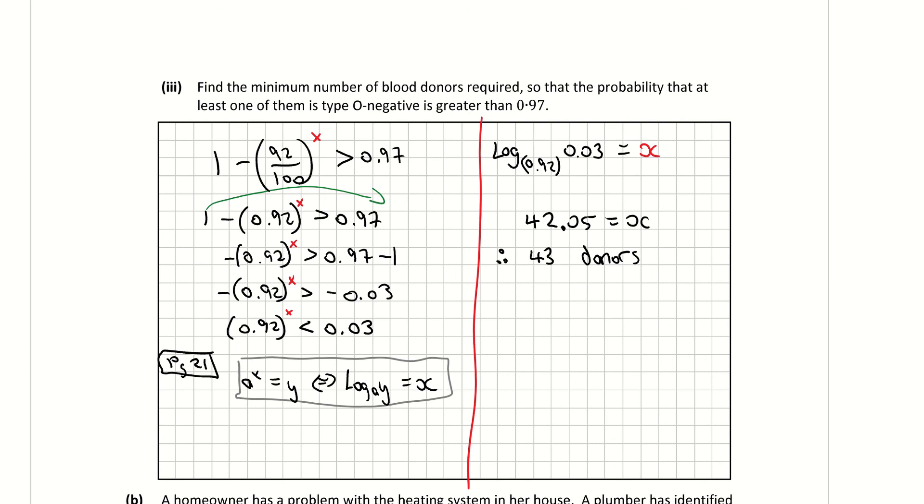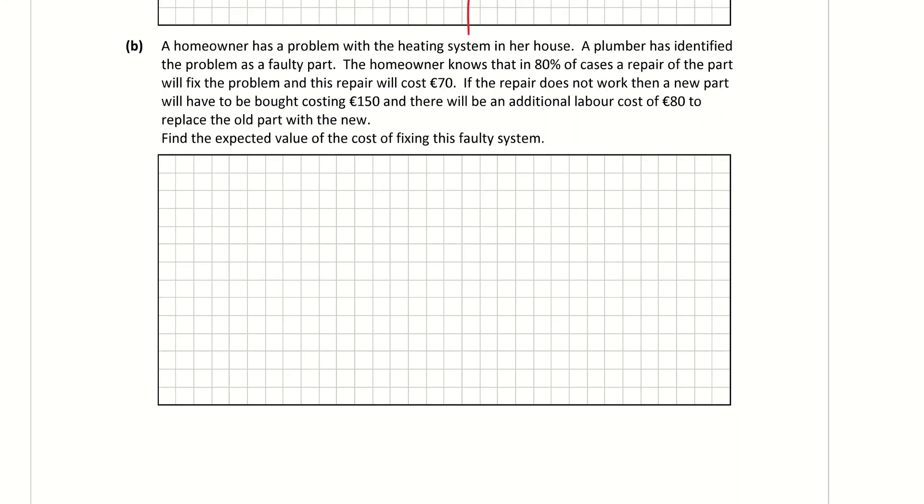Part b to that question. So it's different now. We've finished part a, those three parts were linked. b is completely different. So b is saying a homeowner has a problem with the heating system in her house. A plumber has identified the problem as a faulty part. The house owner knows that in 80% of cases, a repair of the part will fix the problem with a repair cost of €70. If the repair does not work, then a new part will have to be bought costing €150, and there's an additional labour cost of €80 to replace the old part with the new. Find the expected value of the cost of fixing the faulty system.